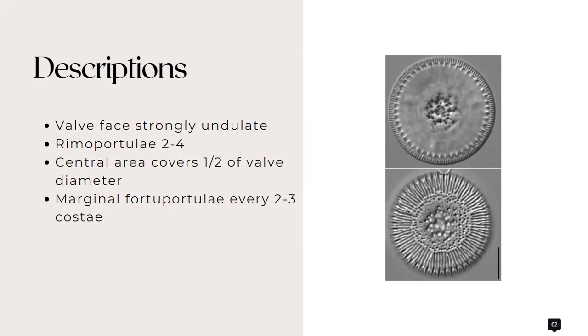Valve ornamentation consists of two parts: the regionally arranged areolae in the central area and the alveolate striae at the margin. It also has rimoportulae which, on the valve, occur at the end of a shortened alveolate striae.